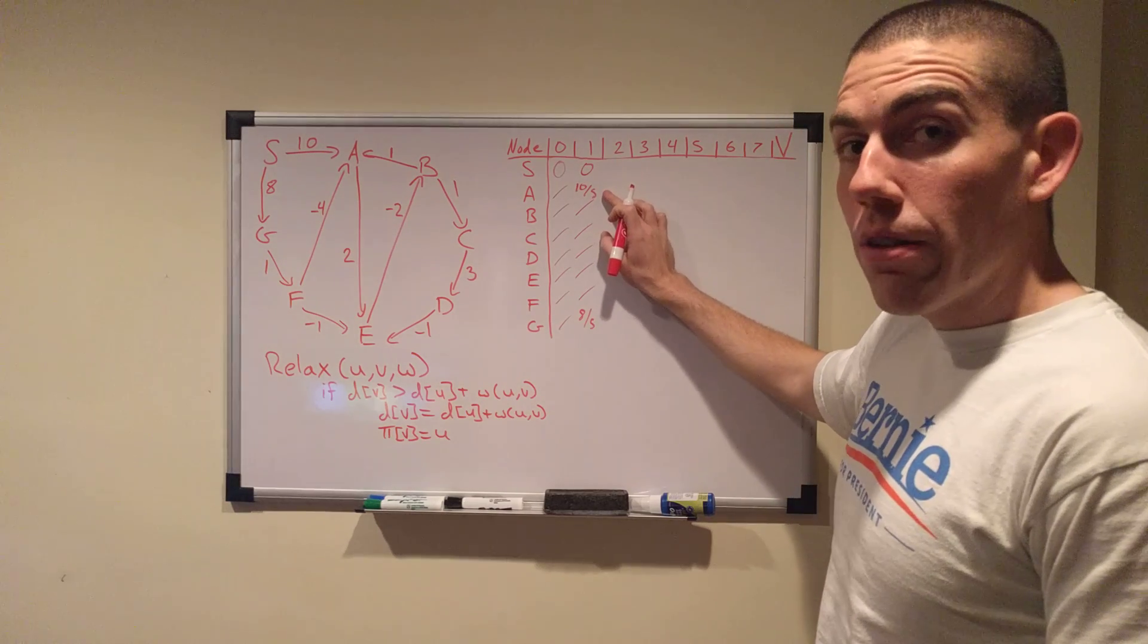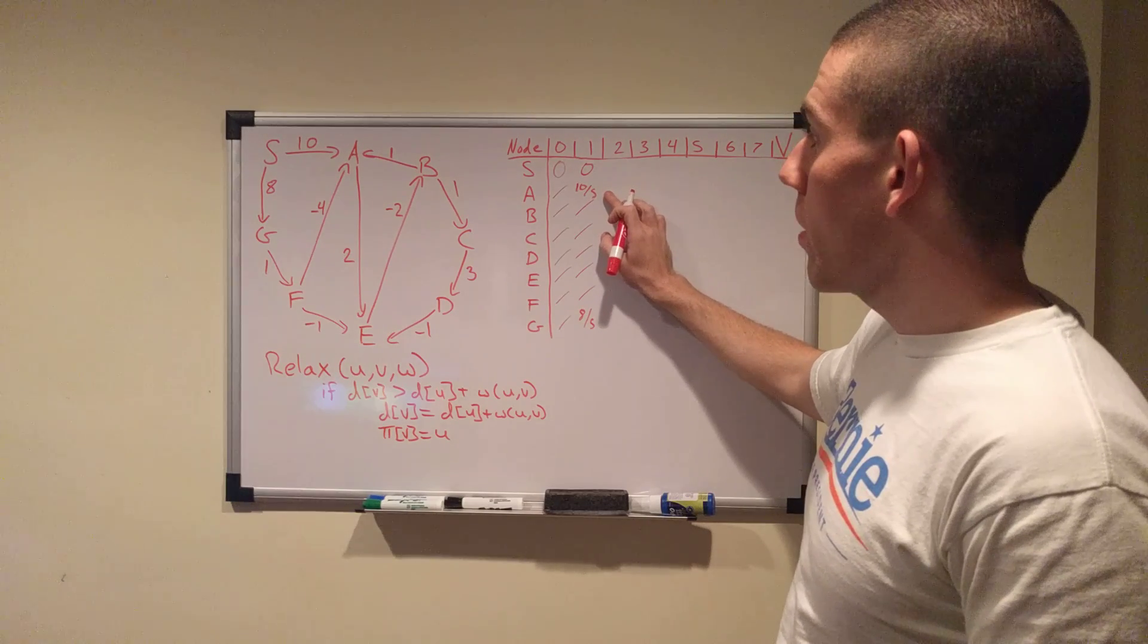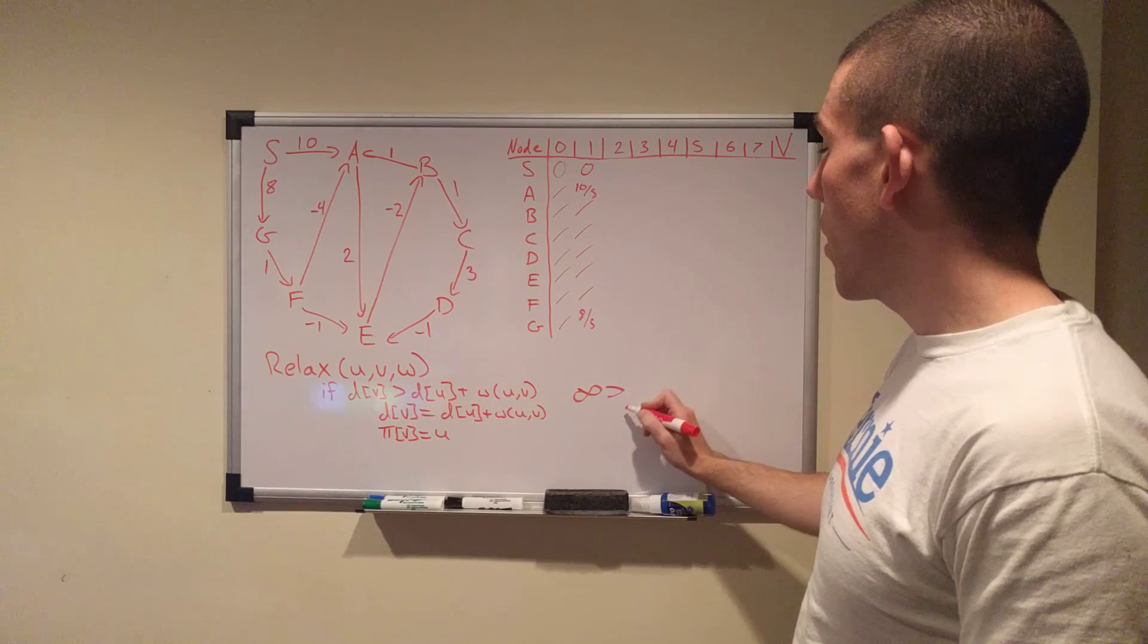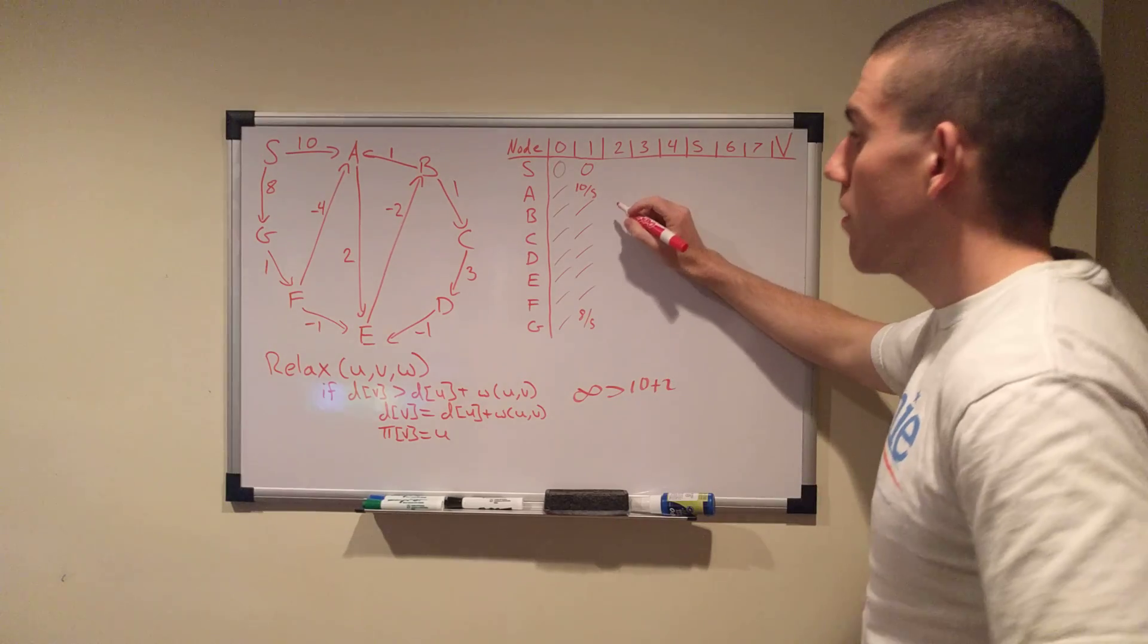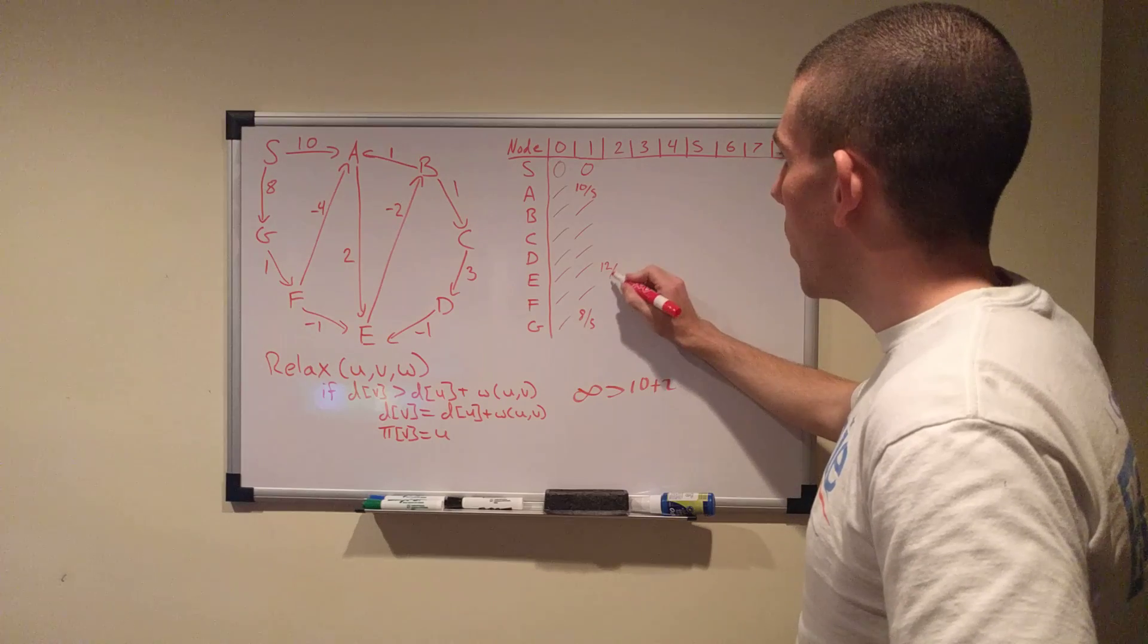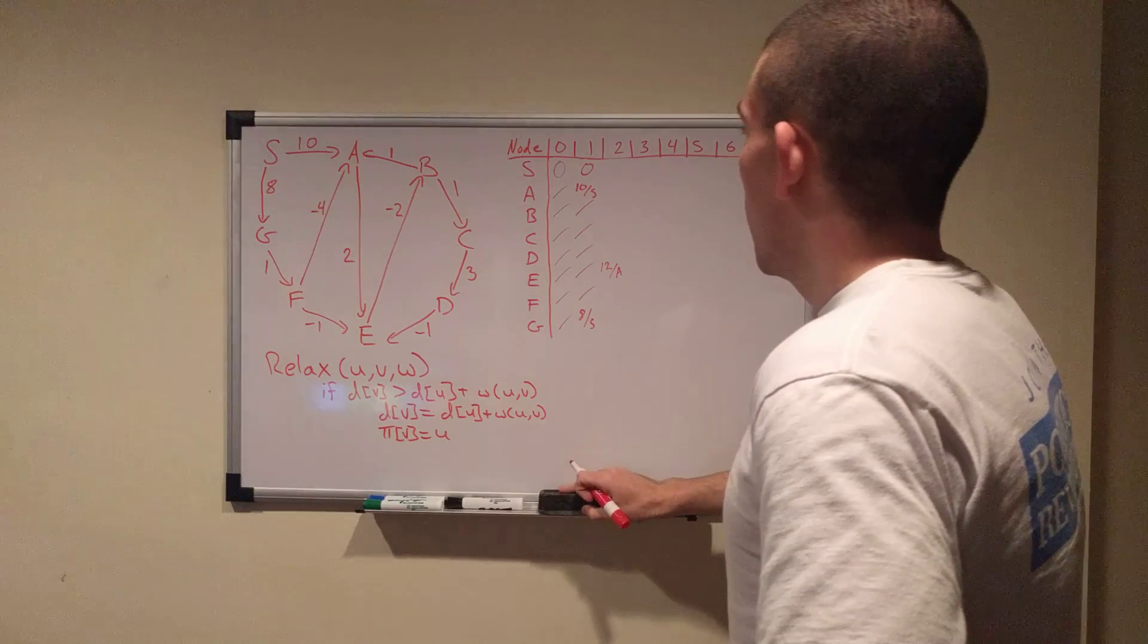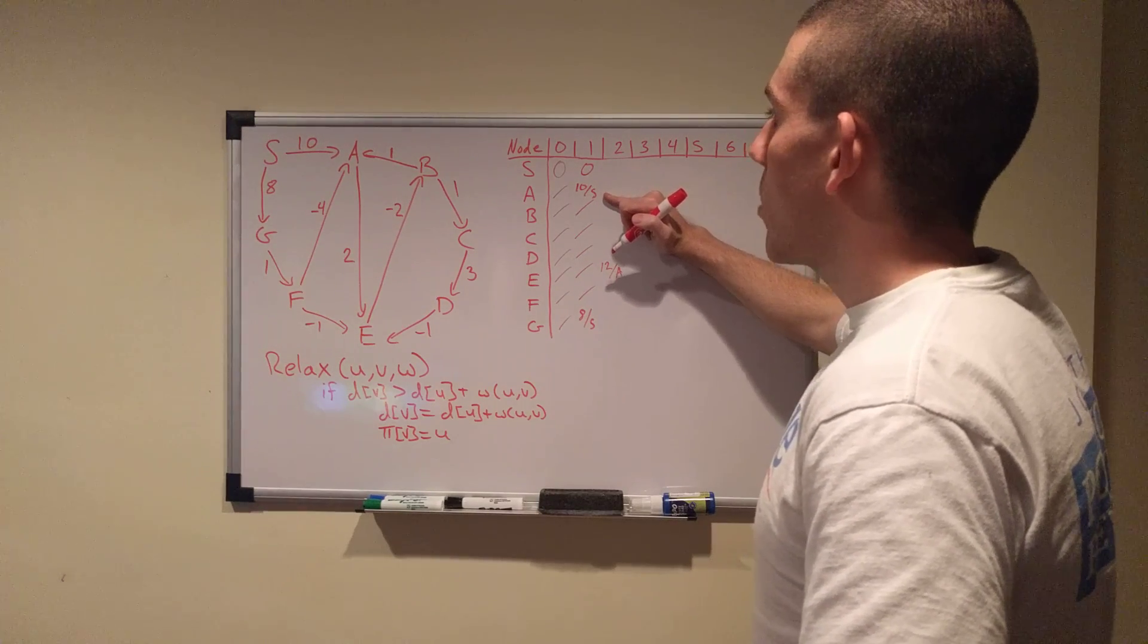We can relax A now, though, because we have data on it. So we know that we get to A at a cost of 10. A has one outgoing edge, and it goes to E. So is infinity greater than 10 plus 2? Yes. Of course it is. So, E gets updated with a cost of 12 coming from A. All right? And that's A's only outgoing edge, so we're done with that.